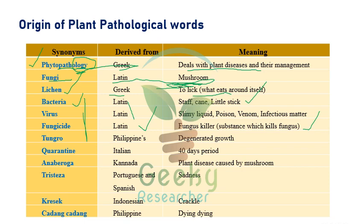Fungicide is a Latin word meaning 'fungus killer' — the chemical used to kill fungus. Tungro is a Philippines word meaning 'degenerative growth,' commonly observed in rice with symptoms like stunted growth and yellowing of leaves. Rice tungro virus (RTV) can be identified using the iodine test.